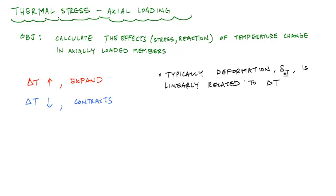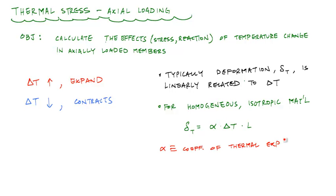For a homogeneous isotropic material - homogeneous means it's the same throughout, isotropic has the same material properties in all directions - this axial deformation is alpha times the temperature change times the original length. This coefficient of thermal expansion typically has units of 1 over degree C,